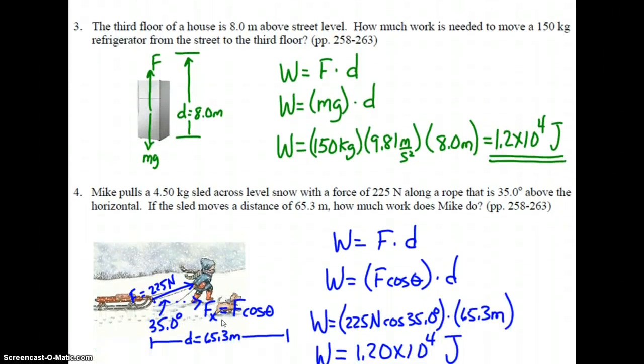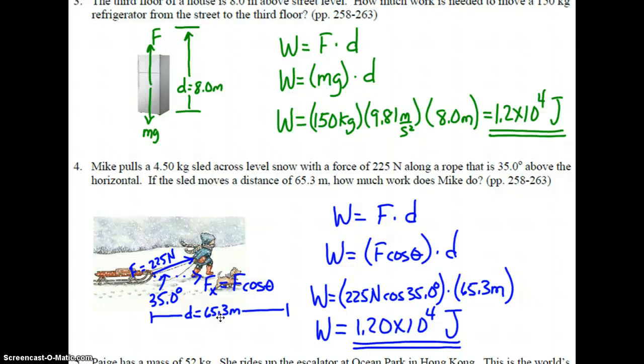Number four. Mike pulls a sled of mass 4.50 kilograms across level snow with a force of 225 newtons along a rope that is 35.0 degrees above the horizontal. If the sled moves a distance of 65.3 meters, how much work does Mike do? Here we have a diagram and we have the rope attached to the sled. I put an F equals 225 newtons of force that Mike is pulling here at 35 degrees with a horizontal. The displacement is 65.3 meters across the ground. You can see that F is not parallel to D.